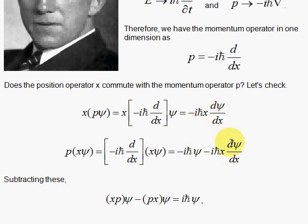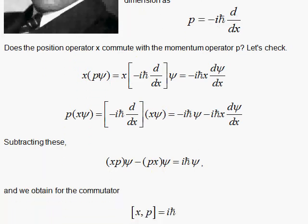Subtracting the two orderings, the cross terms cancel, and we're left with plus i h-bar. The commutator of x and p — position and momentum — is non-zero. This means these do not commute, and that means when you make the momentum measurement, you will disturb the state and knock it out of the position you had before. So you cannot determine the position and the momentum simultaneously for a particle.